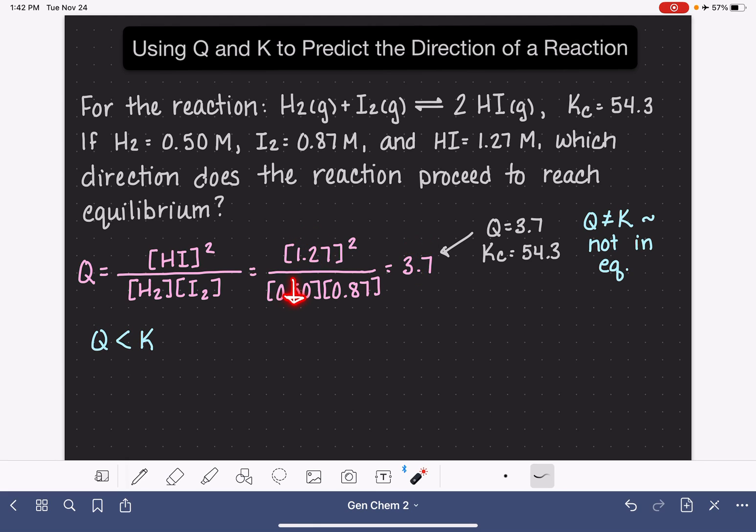Also, if we were to make these smaller numbers, because of the inverse relationship here, if these numbers get smaller, this number gets bigger as well. So if Q is too small, what we need to do is increase our numerator.